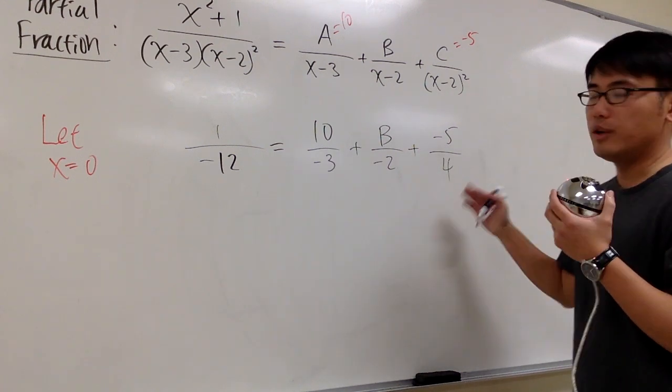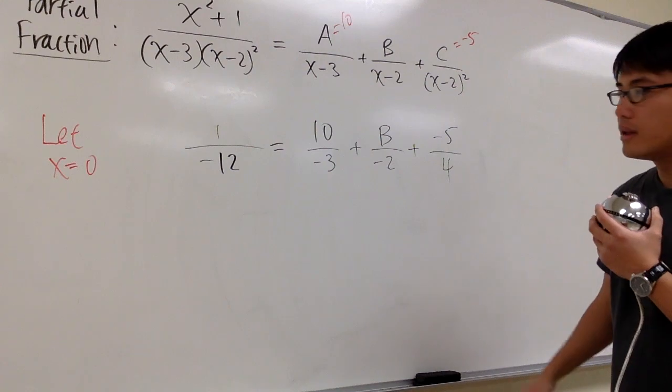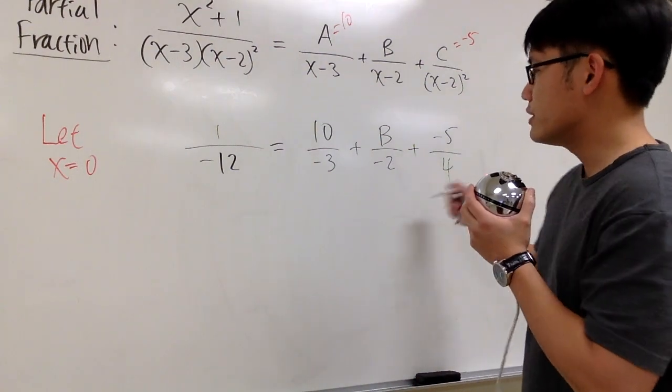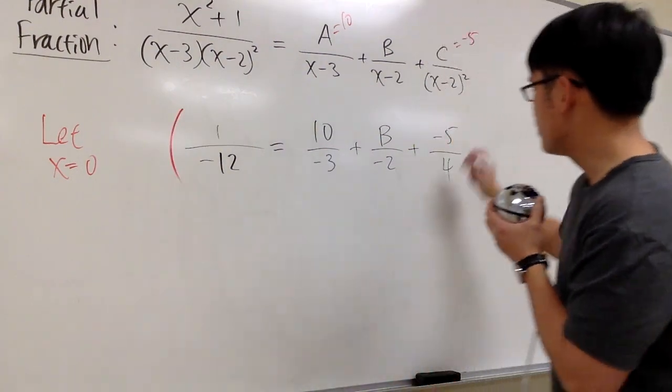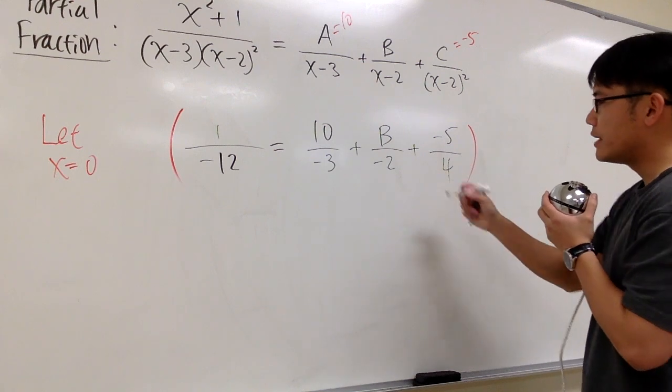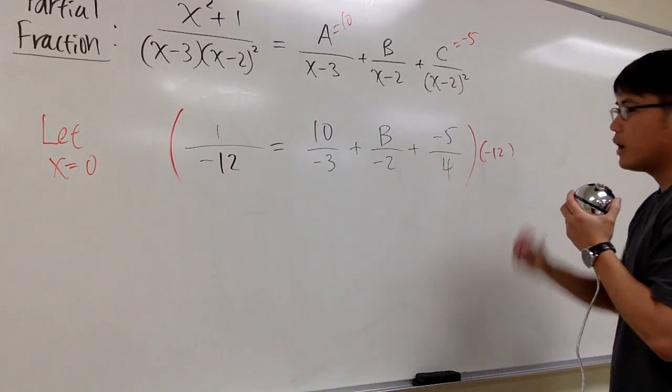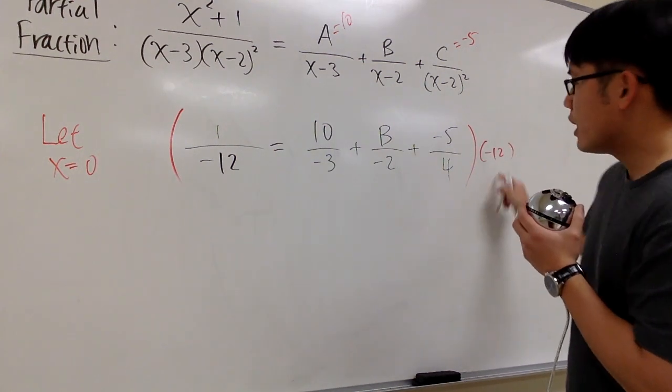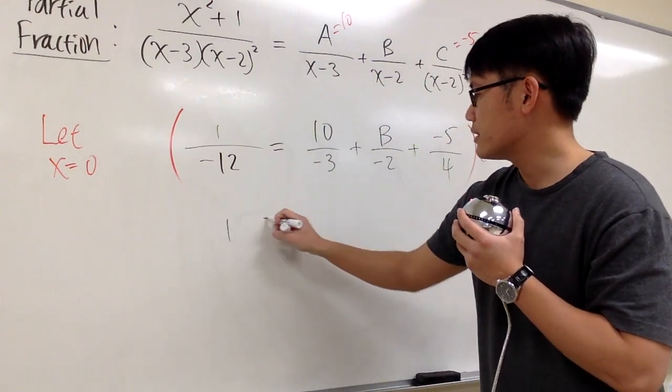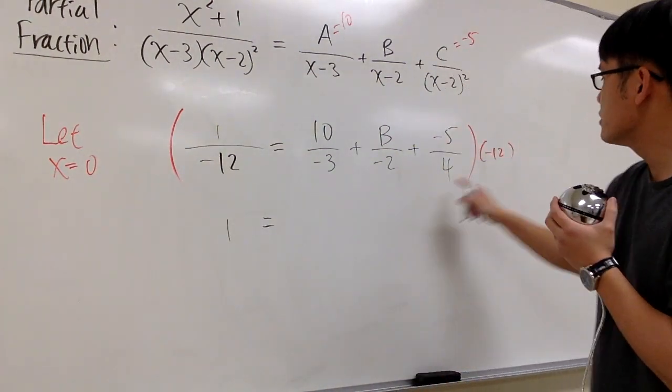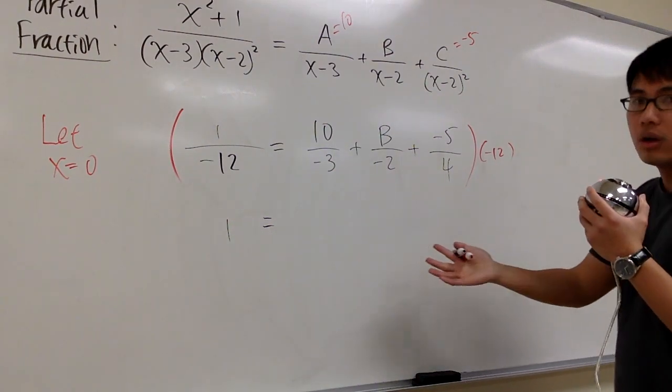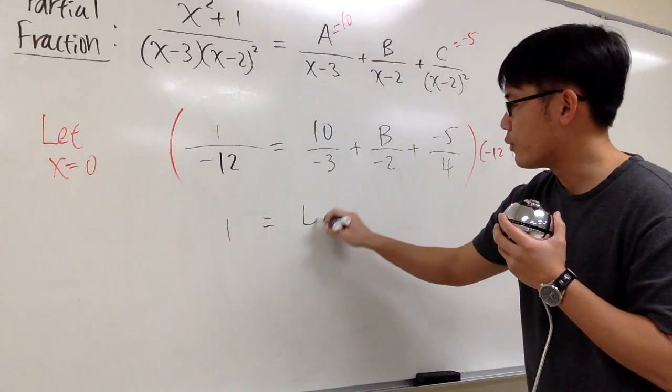And we can just solve for this equation and we'll get the value of B. This is an equation with fractions. Let's multiply everything by the lowest common denominator, which is negative 12. Negative 12 times this, we just get 1. Negative 3 cancels out with negative 12, we get 4. 4 times 10, we get 40.